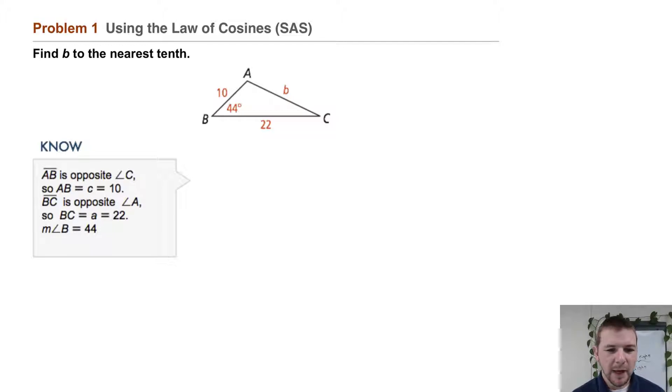Consider what we know. We know segment AB is opposite to angle C, so AB equals C, which equals 10. We know segment BC is opposite from angle A, so BC equals A, which equals 22. And we know the measure of angle B is 44. What we need to find is the length of AC, segment AC.